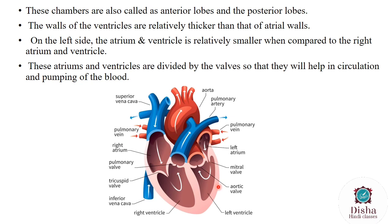The left side will be pumping blood from the lungs, and the posterior chamber will be sending blood to the whole body — that is the reason it needs extra pressure or force to pump the blood. The atria and ventricles are divided by valves, which help in circulation and pumping of blood. Between these septums we can see the valves, which assist in circulation and pumping of blood.